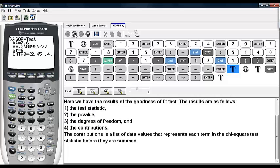Now we see that we have the test statistic, the p-value, the degrees of freedom again, and then we have CNTRB.